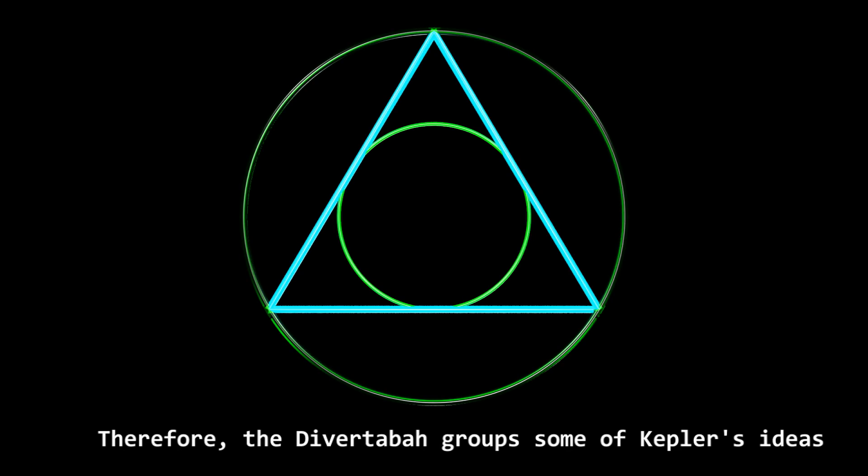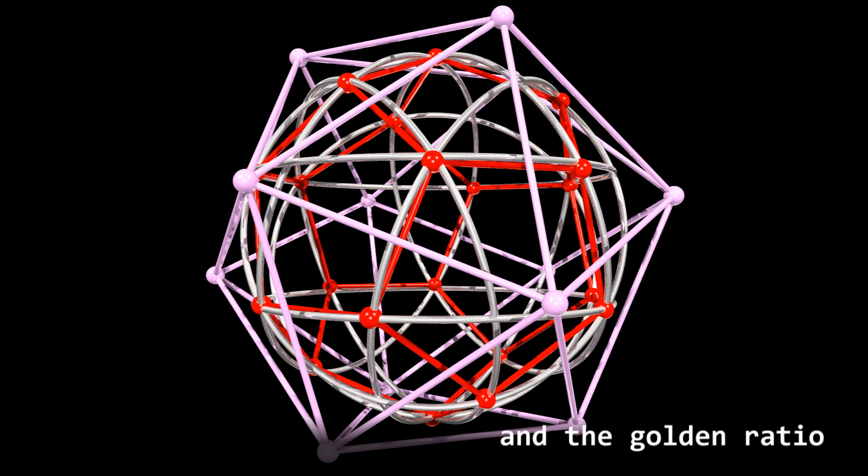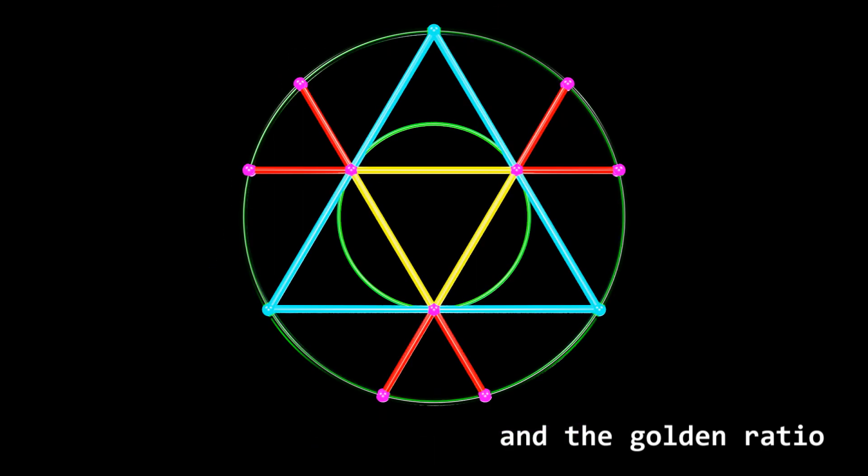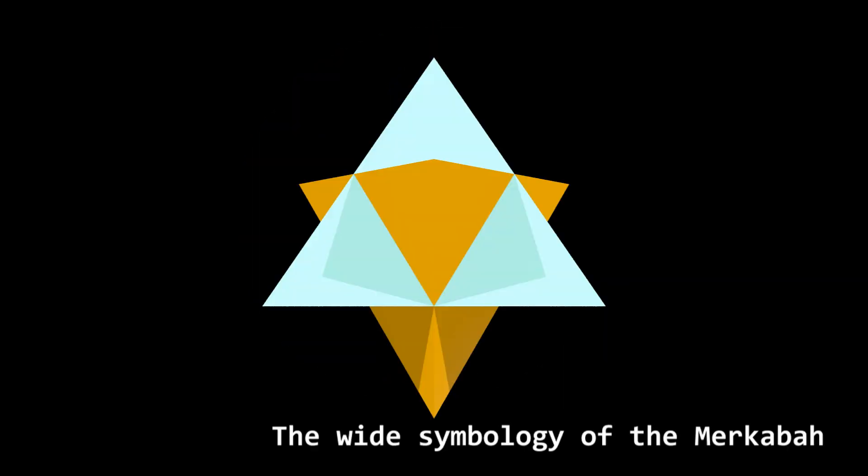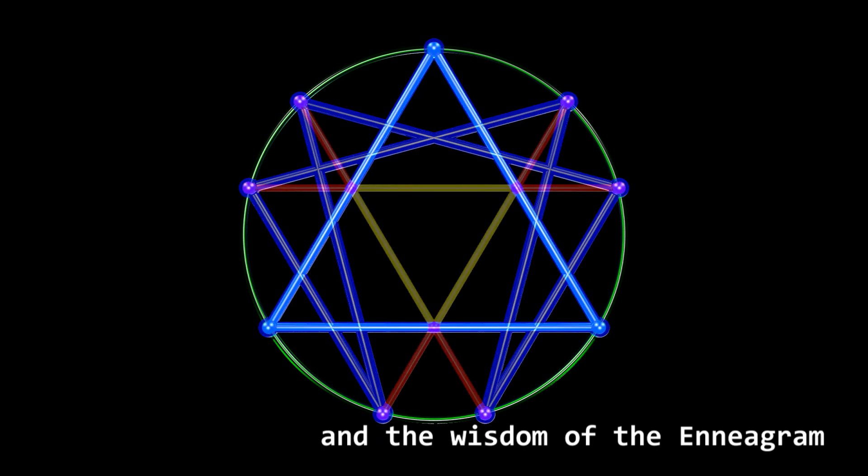Therefore, the Dibertabar groups some of Kepler's ideas like the platonic solids and the golden ratio, the esoteric symbology of the Metatron's Cube, and the wisdom of the Enneagram.